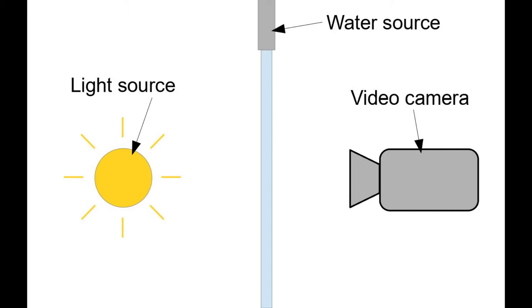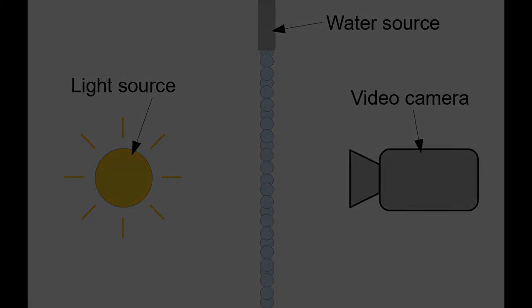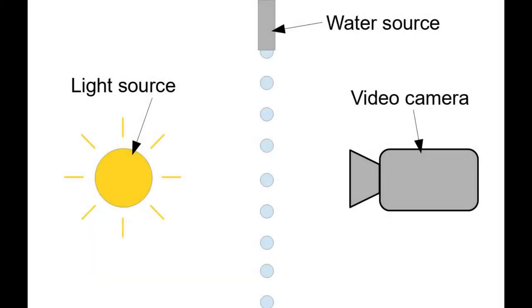Now let's imagine that we are reducing the water stream until we get to individual water droplets. Once we have done that this is the moment where the light source starts to play its role. Let's imagine for a moment that we are in a dark room. If we will turn on the light source just for a brief moment we will see the exact location where each water droplet is located.